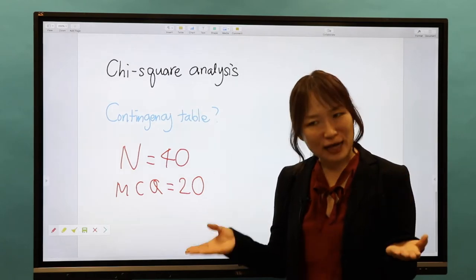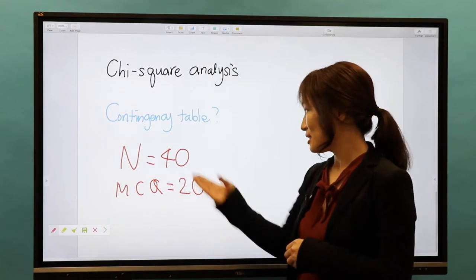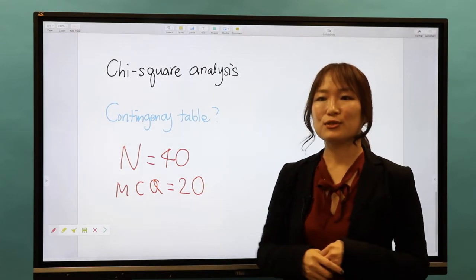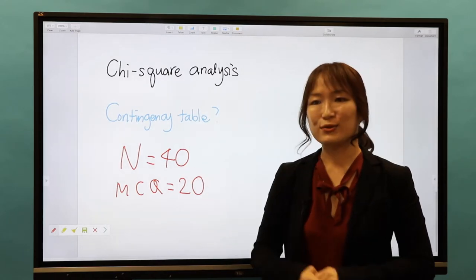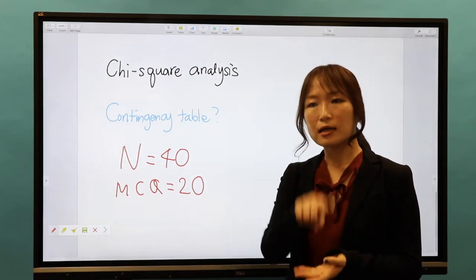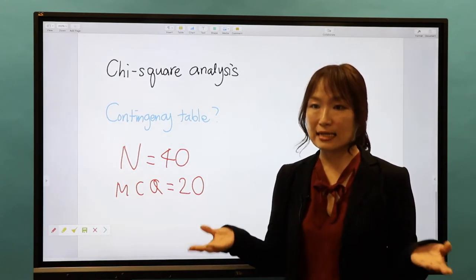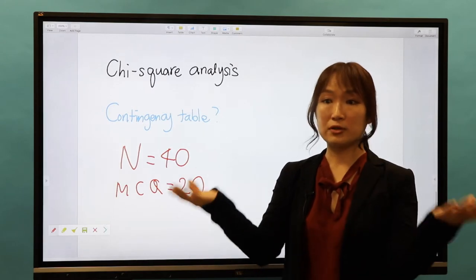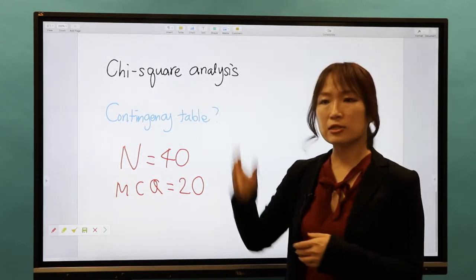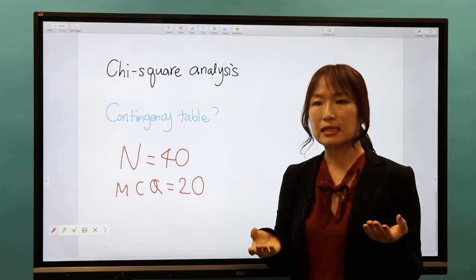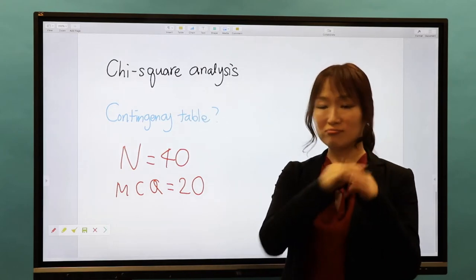Here is a final question. Let's say I created a test comprising 20 multiple choice questions and administered it to 40 students. Then I counted the number of correct answers out of the 20 questions—like 18, 17, some student got 15 out of 20. Can I use a contingency table for data analysis in this situation? Yes, no, and why?